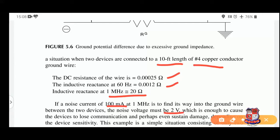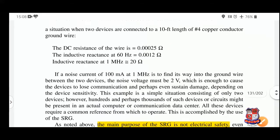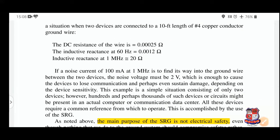A noise voltage of 2 volts is enough to cause the device to lose communication and perhaps even sustain damage, depending on device sensitivity. This example is a simple situation consisting of only two devices. However, hundreds and perhaps thousands of such devices or circuits may be present in an actual computer or communication data center. All these devices require a common reference ground from which to operate — accomplished by the use of SRG.